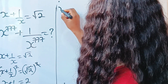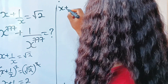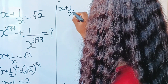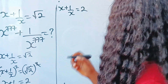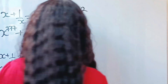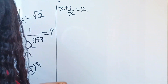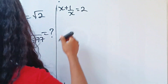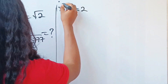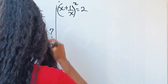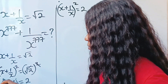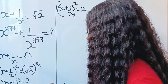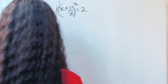So we have x plus 1 over x is equal to 2 — and to be clear, that expression on the left is squared, and the result on the right is 2.